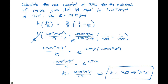Since our given rate constant has two significant figures, we should represent this as 7.6 times 10 to the minus four molar to the minus one second to the minus one.